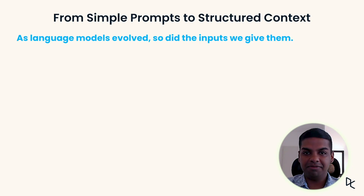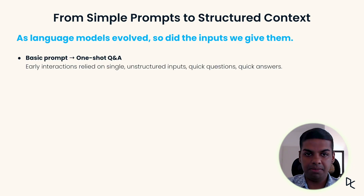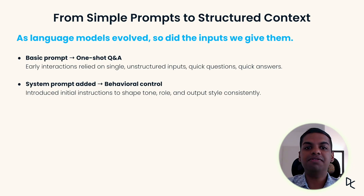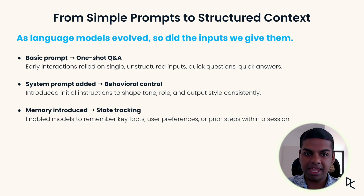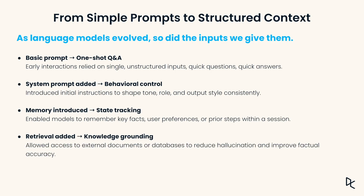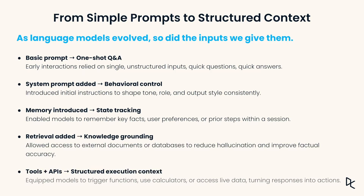As language models evolved, so did the inputs we give them. We started off with simple prompts, then added system instructions for behavior. Afterwards, it was memory for state tracking, then retrieval for grounding knowledge, and tools and APIs for structured execution. Each of these layers made the model more capable, but also more dependent on having the right context. This is why we need to make sure that we have the right context and why context engineering is really important.